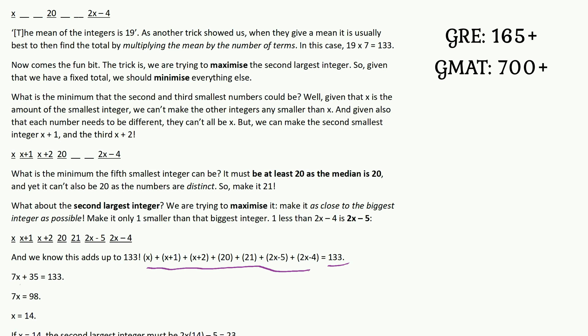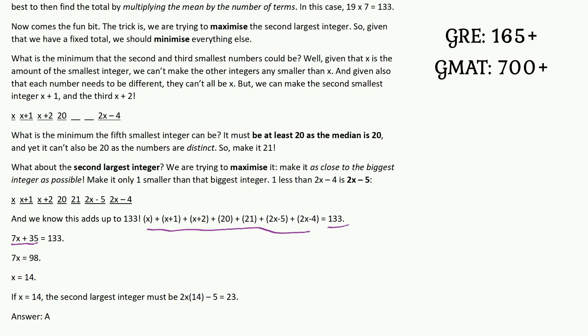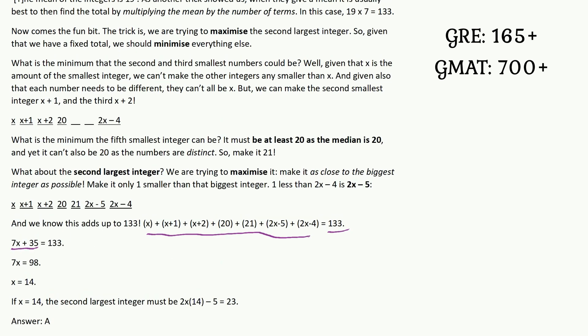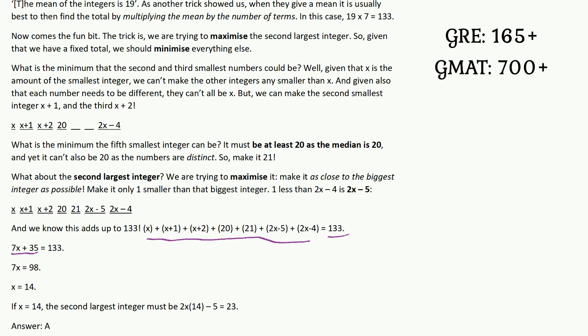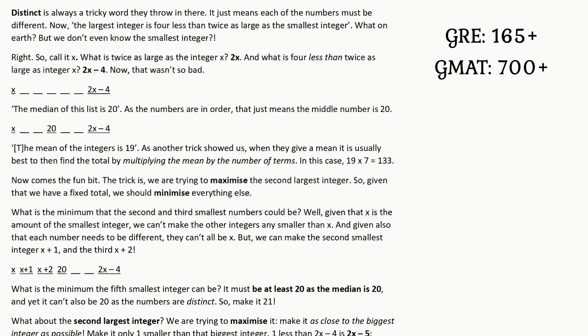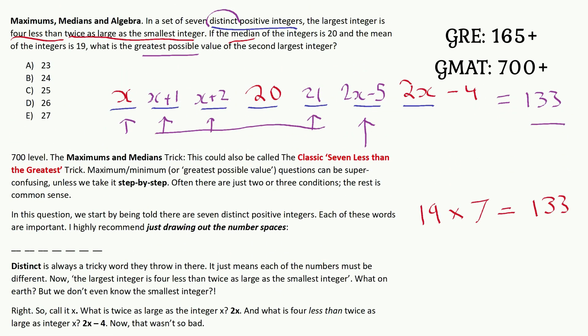And what I've done is add up all of these terms and make them equal to 133. That becomes 7x plus 35 equals 133. And taking away 35 from both sides, 7x is 98. Dividing by 7, x is 14. But we don't pick 14 as the answer, because the question is actually what is the value of the second largest integer, or the greatest possible value. So if x is 14, the second largest integer is 2 times 14 minus 5, which is 23, which is answer A.